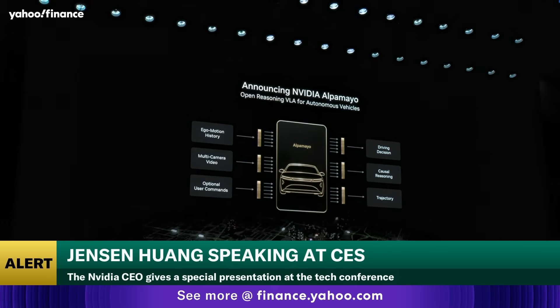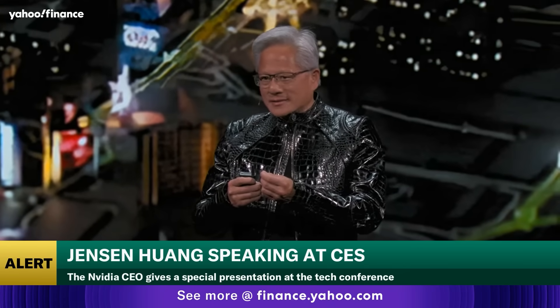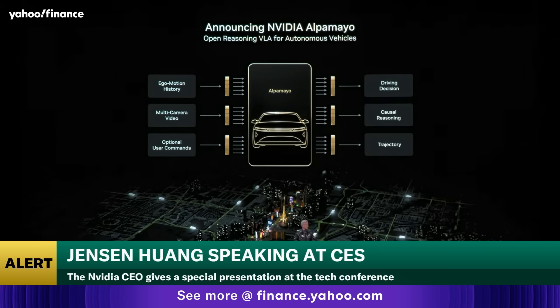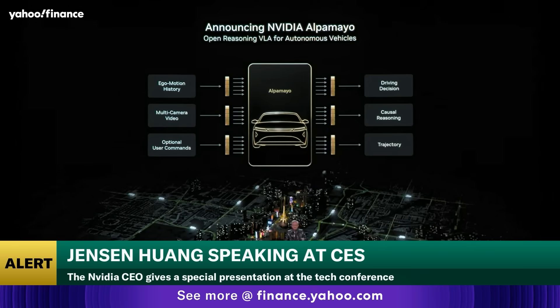Alpamayo is trained end to end, literally from camera in to actuation out. The camera input comes from lots and lots of miles driven by itself, human demonstration, and lots of miles generated by Cosmos. In addition to that, hundreds of thousands of examples are labeled very carefully so that we could teach the car how to drive. All of these are coupled directly and trained specifically by a large combination of human-trained as well as Cosmos-generated data.